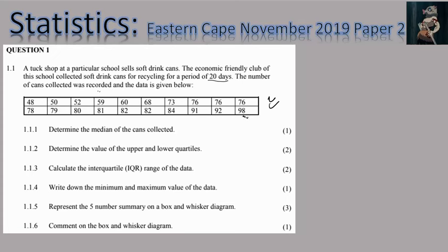This is organized data because it goes in ascending order from the smallest value up to the biggest value. Question 1.1 asks for the median of the data collected. The median is Q2 — the middle value. If we have 20 values in total, our median is going to be between value number 10 and value number 11.